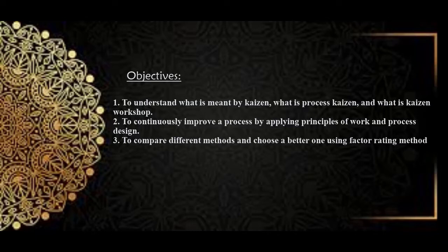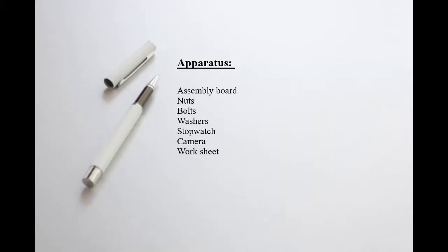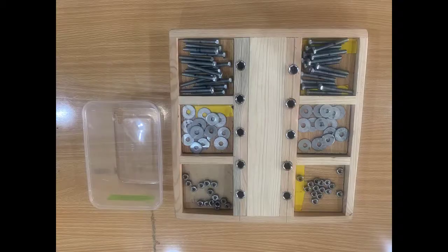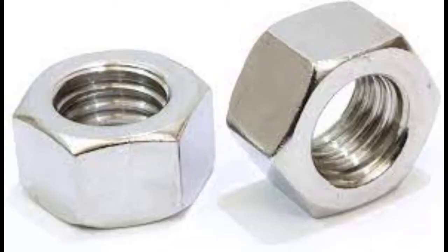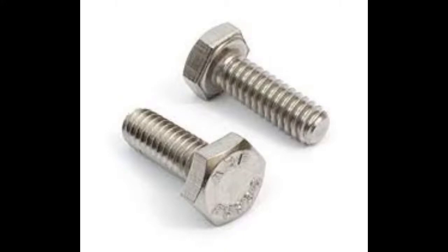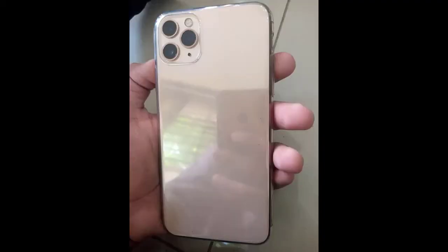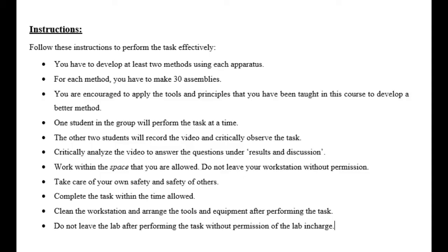Another objective is to compare different methods and choose a better one using the factor rating method. For today's lab, the apparatus required includes an assembly board, nuts, bolts, washers, a stopwatch, and a camera. Follow the given instructions to perform the task effectively.